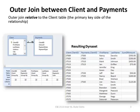Notice the outer join — there is an arrow. The arrow signifies that we are doing an outer join relative to the clients table. We are creating the same query: group by, group by, sum. And notice now when it runs the query, the resulting Dynaset will show all of our clients regardless of whether they have made a payment or not.